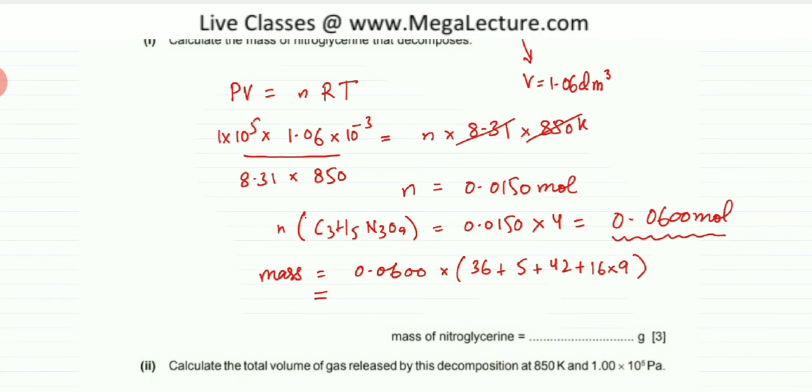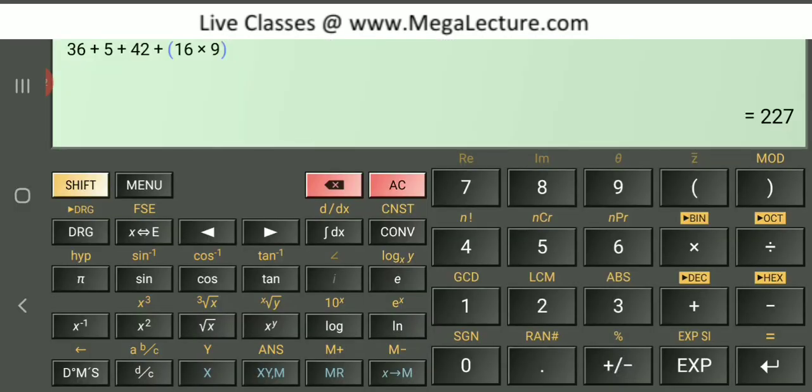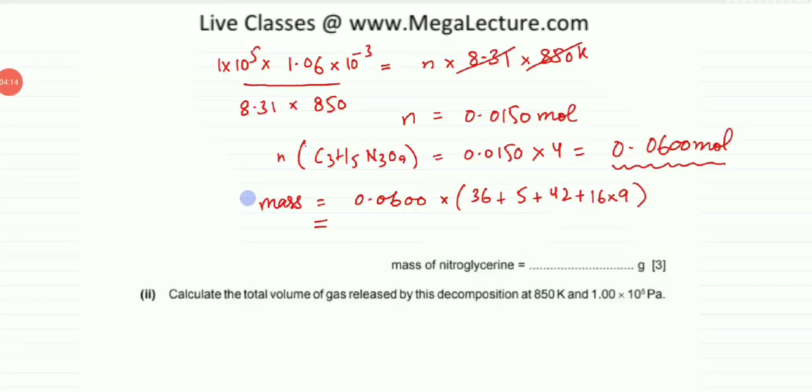And let's do this calculation now. Let me open the calculator. So here you can see the working and this entire thing has to be multiplied by 0.06. So here's the working and you can see the mass on your screen, it comes out to be 13.62 grams. So the answer to the first part is 13.62 grams.